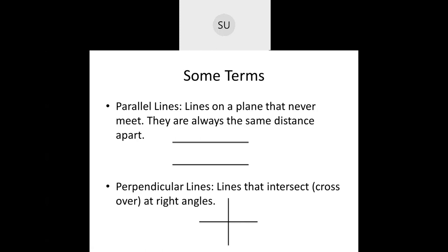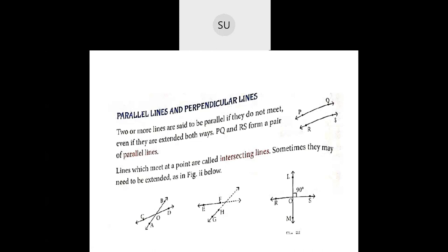Then perpendicular lines — lines that intersect or cross over at right angles, that is at 90 degrees, are called perpendicular lines. Two or more lines are said to be parallel if they do not meet, even if extended both ways. Here PQ and RS form a pair of parallel lines. Lines which meet at a point are called intersecting lines — sometimes they may need to be extended to meet. In the third figure, they intersect at 90 degrees, so they are called perpendicular lines.